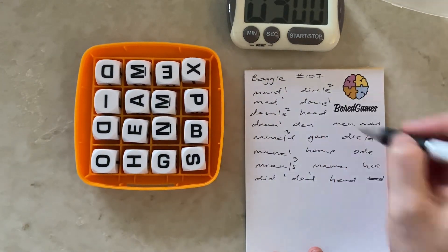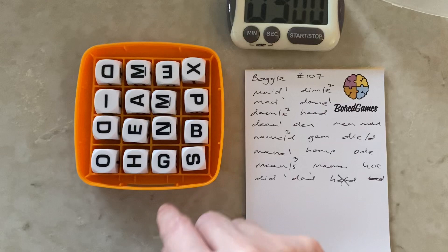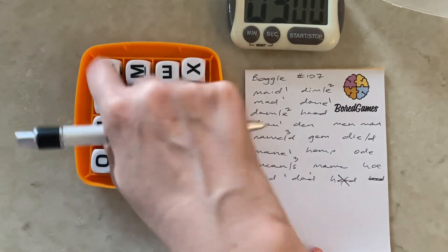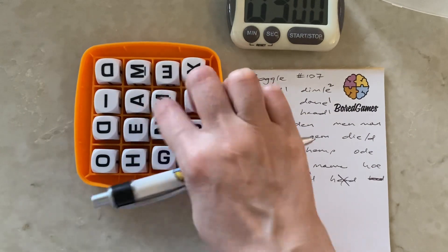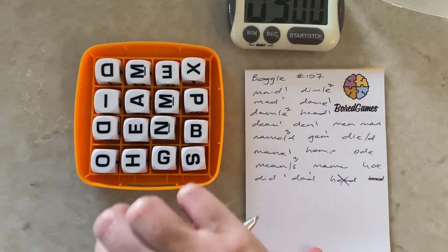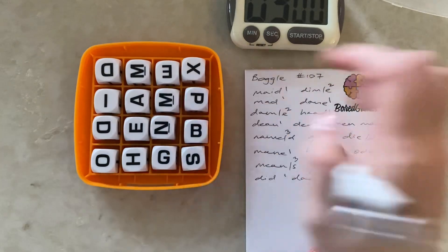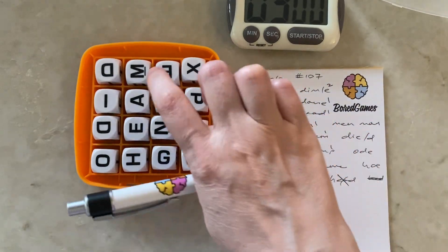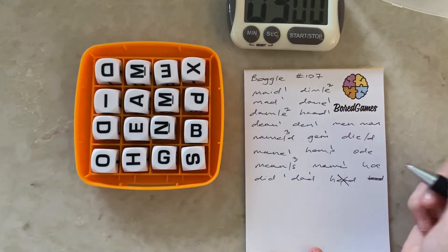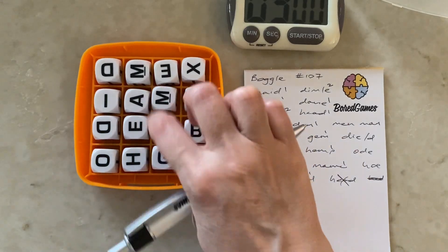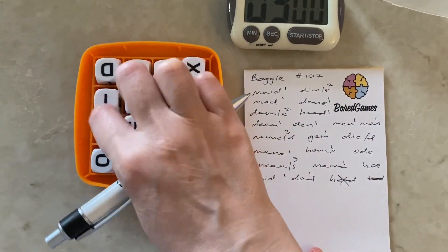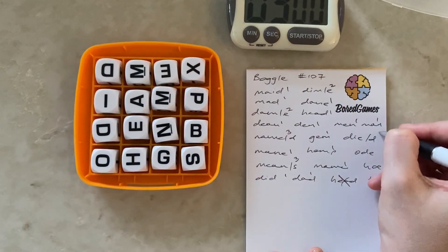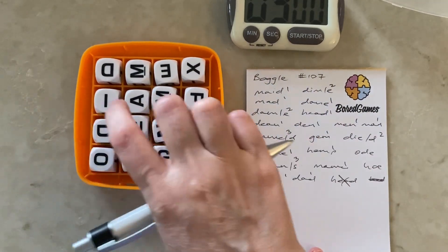Head. Head. I've actually written head twice. I tried to write it three times. Den and gem, hemp, meme, men and man, dye and died, ode, and hoe.